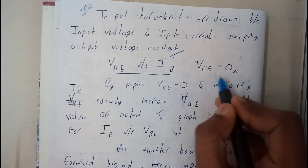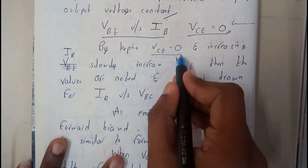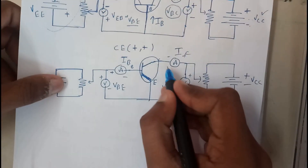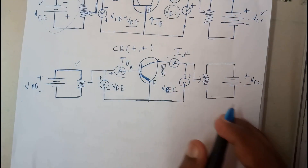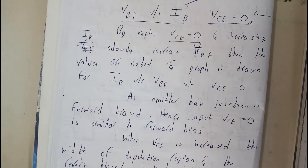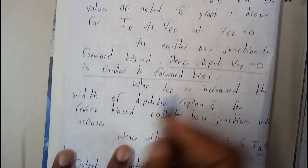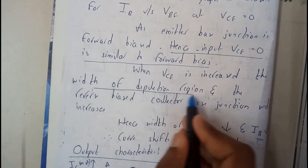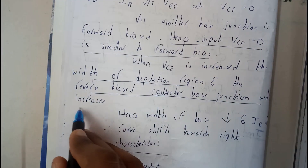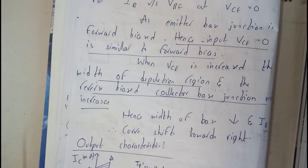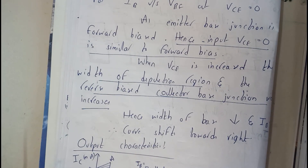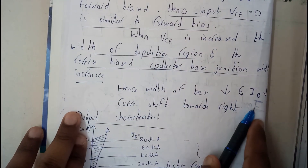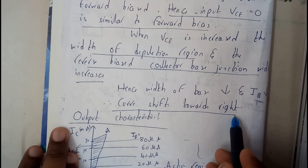This is the symbolic representation where VCE equals zero, that is constant. By keeping VCE constant and increasing IB slowly — this is an NPN transistor, emitter-base junction is forward biased and collector is reverse biased, so it's in the active region. As VCE is increased, the width of the depletion region increases, and the reverse-biased collector-base junction width increases. In common base it's inversely proportional; here it's directly proportional, so the curve shifts to the right. Hence, the width of the base decreases, so if IB decreases, that's the key point.